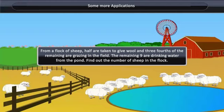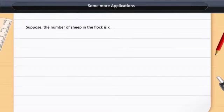Suppose the number of sheep in the flock is X. So, the number of sheep taken for rearing wool is half of X, that is, X by 2.